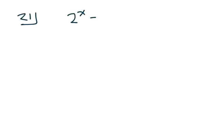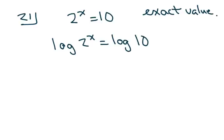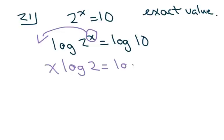Alright, so we're going to start with 21, and we have 2 to the X equals 10. You don't get to use the calculator, but I'm going to go ahead and do both the exact value and the approximate value. The exact value is the one you want on your test or daily assignments. So you take the log of both sides. We're trying to solve for X and it's as a power right now, so we're going to use our power property and bring it out front. And you divide both sides by log of 2.